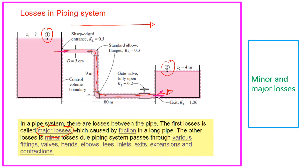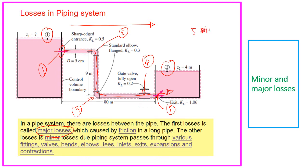The other type is minor losses, due to the piping system passing through various fittings: valve, bend, elbow, tees, inlet, as well as expansion and contraction. For example, here we have an inlet, which is your first minor loss. Then we have a 90-degree elbow — your second minor loss — and another 90-degree elbow, which is your third minor loss. We also have a globe valve, which is also a minor loss, and lastly we have an exit, which is also a minor loss. So we have here 5 minor losses.